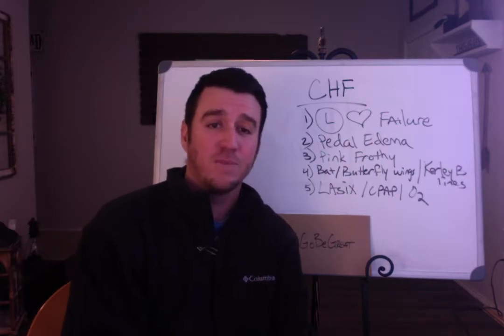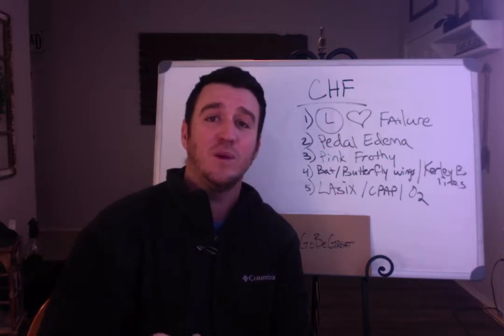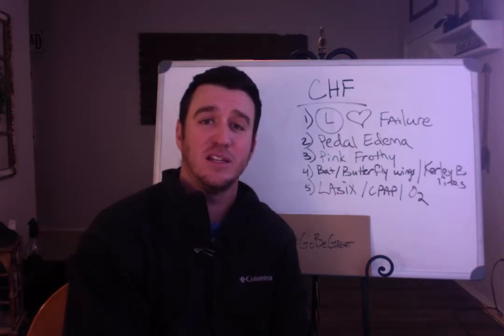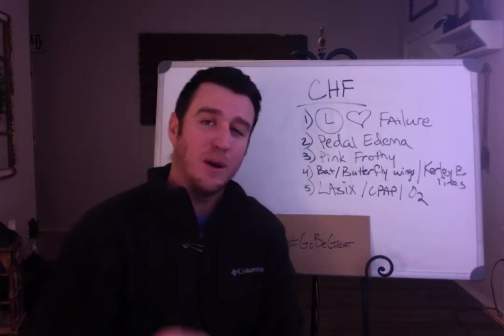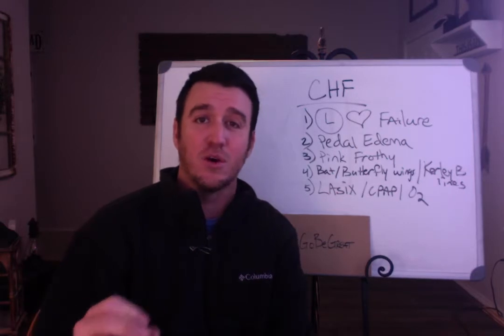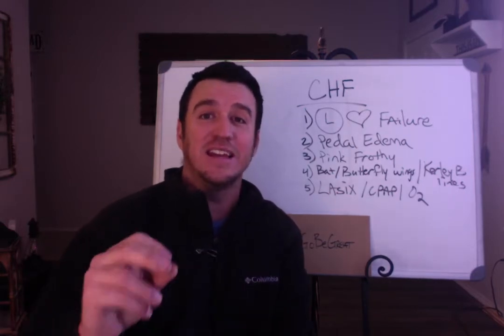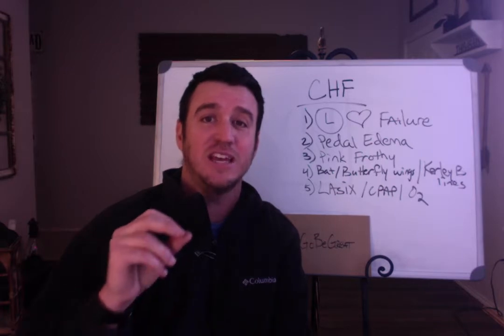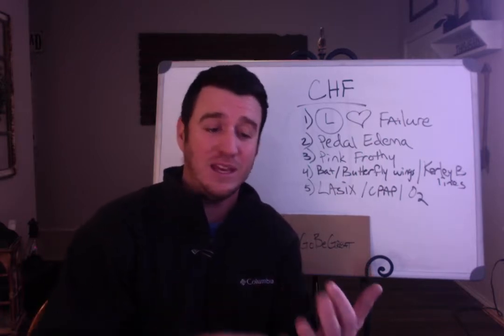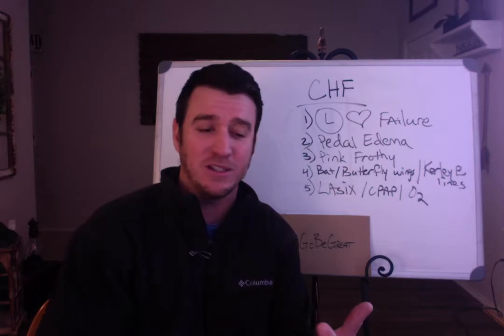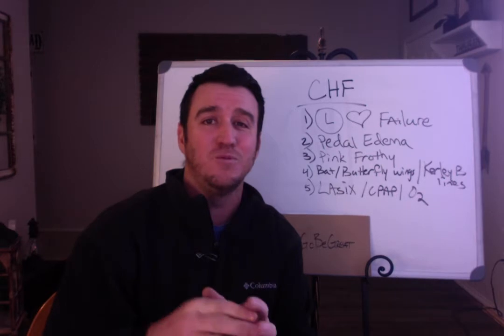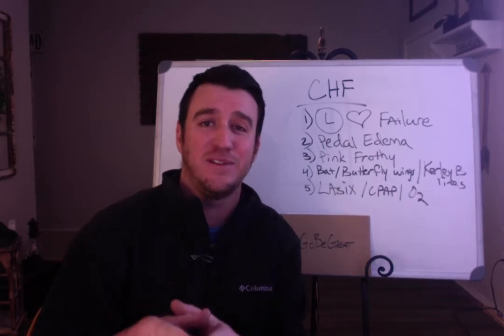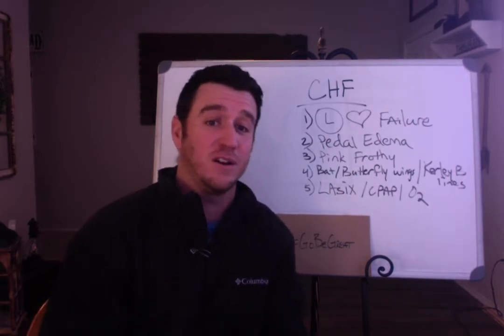Point number four: when we look at our chest X-ray, what will we see to know we're talking about pulmonary edema associated with congestive heart failure? The most common thing you'll see is either a bat wing appearance or a butterfly appearance. The key term is Kerley B lines. So bat wing, butterfly wing appearance, or Kerley B lines are all key radiological findings associated with congestive heart failure.